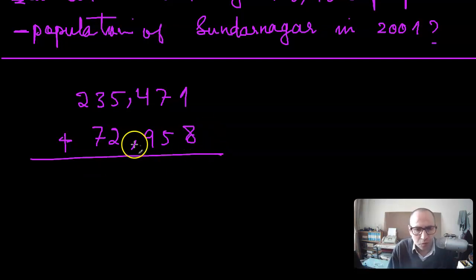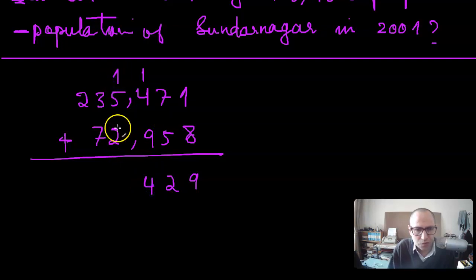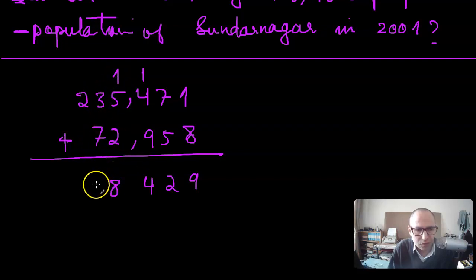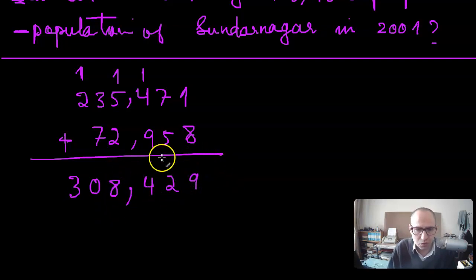Performing the column addition: 8 plus 1 is 9; 7 plus 5 is 12, write 2 carry 1; 1 plus 4 plus 9 is 14, write 4 carry 1; 1 plus 5 plus 2 is 8; then 6 plus 2 is 8; then 3 plus 7 is 10, carry 1, giving 3. So using the comma as a separator, the result is 308,429.